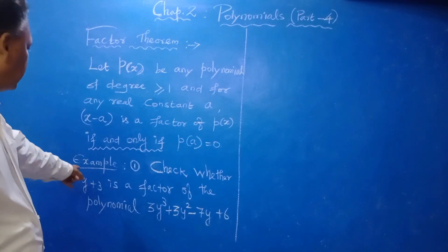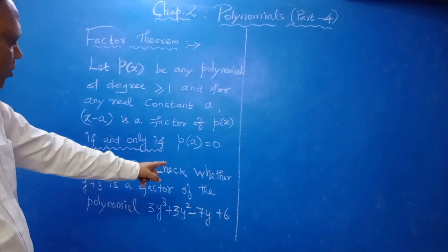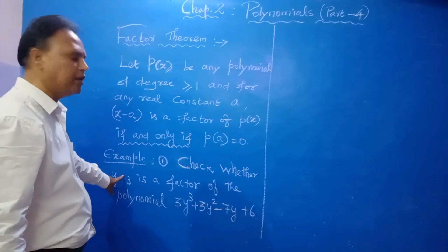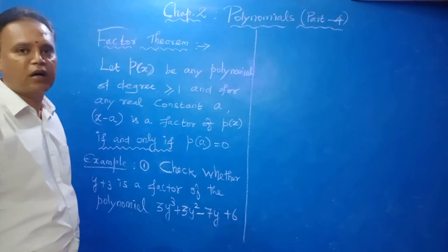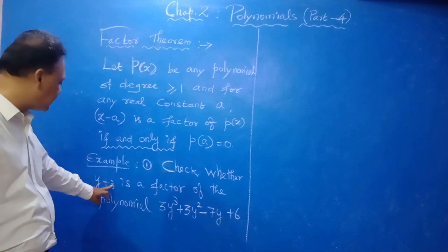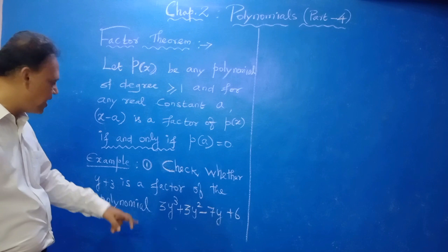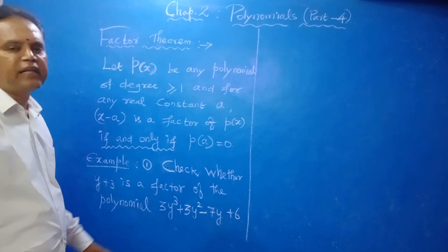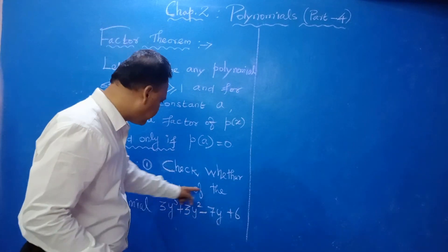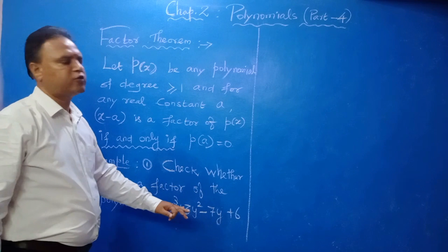Now see Example 1: Check whether Y plus 3 is a factor of the polynomial 3Y³ plus 3Y² minus 7Y plus 6. We have to check whether Y plus 3 is a factor of this polynomial or not. Y plus 3 is of the form X minus A, which we can write as Y minus (minus 3), so A equals minus 3. We have to take this polynomial as P of Y since the polynomial is in Y.